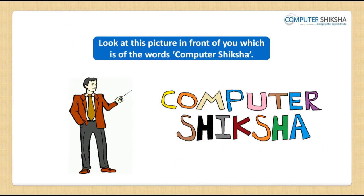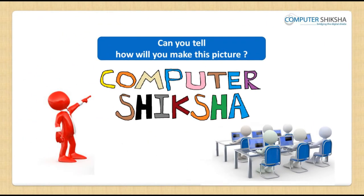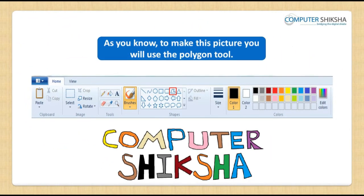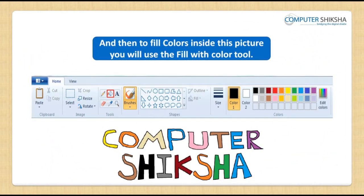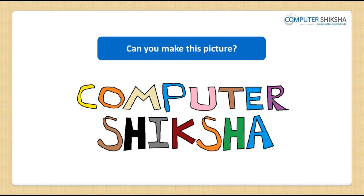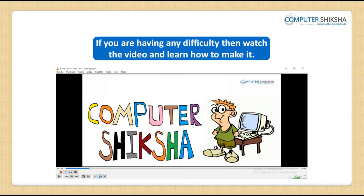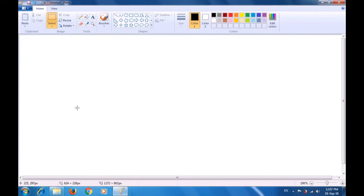Look at this picture in front of you, which is of the words 'Computer Shiksha'. Can you tell how you will make this picture? As you know, to make this picture you will use the Polygon Tool, and then to fill colors inside you will use the Fill With Color tool. If you are having any difficulty, watch the video and learn how to make it.